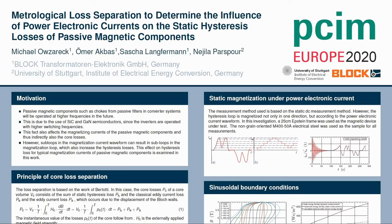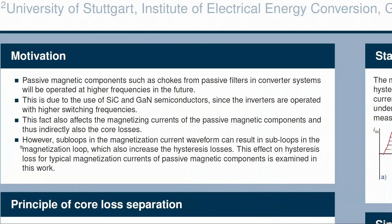First I'd like to start with the motivation of my work. In the future, passive magnetic components like chokes in converter systems will operate at higher switching frequencies. This is because of the use of SiC and GaN semiconductors and the resulting higher switching frequencies. This affects the magnetizing current and indirectly influences the core losses. The target of my work is to investigate the hysteresis loss increase due to the magnetizing current in power electronic applications.